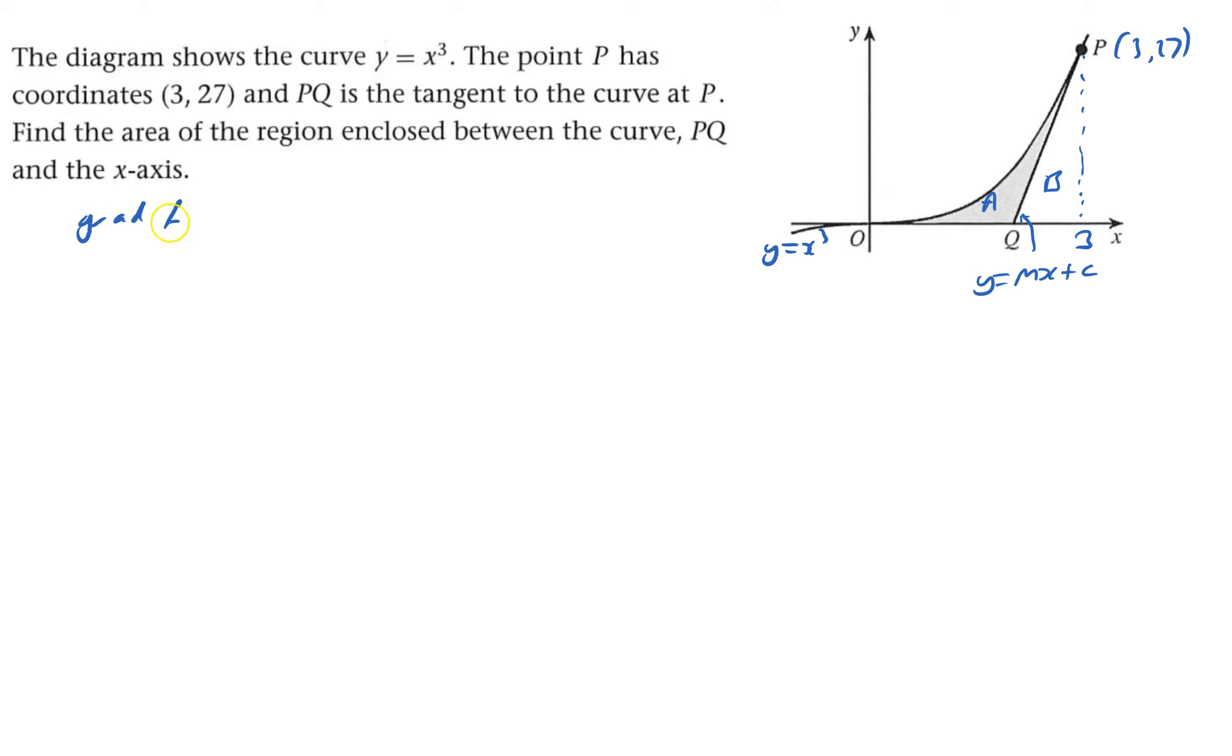which is dy by dx, that equals 3x squared. So when x equals 3, gradient, that would be the m, equals 3 times 9, which is 27. So I get y equals 27x plus c.